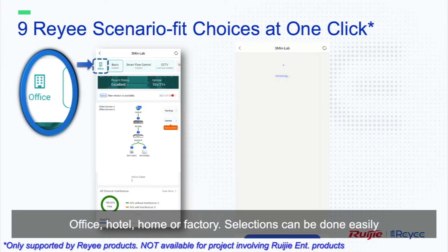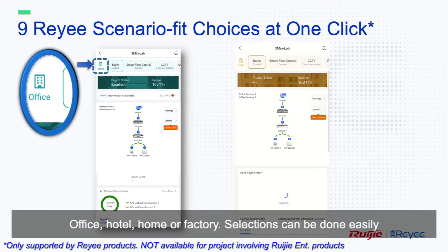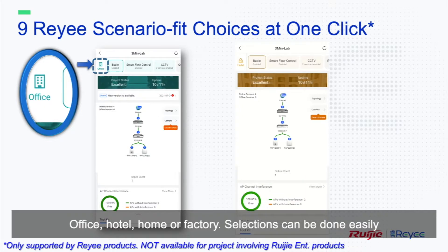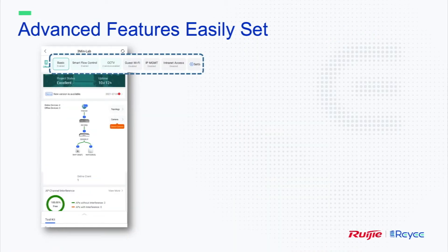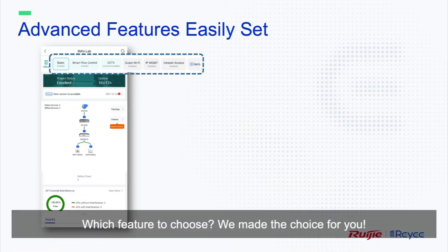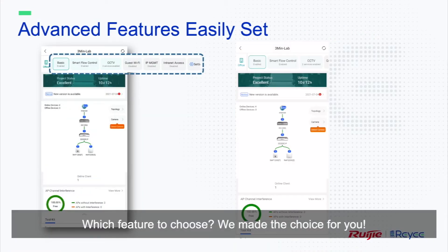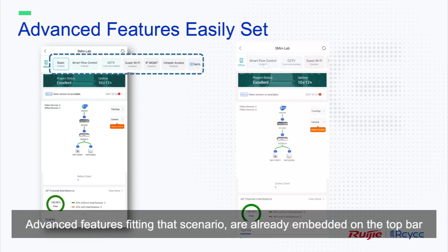Office, hotel, home, or factory — selections can be done easily. Which features to choose? We made the choice for you. Advanced features fitting that scenario are already embedded on the top bar.